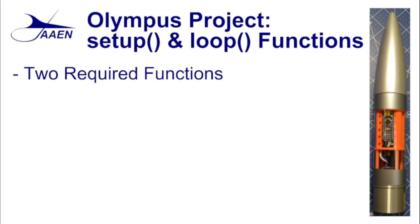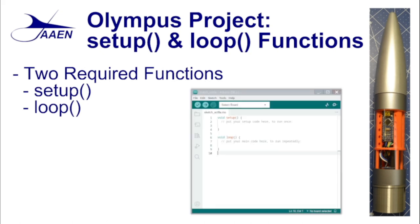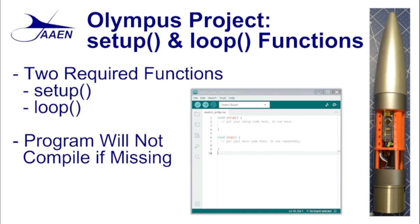With any project that you're using the Arduino for, you're going to find that there are two required functions that you need to have. The first is the setup function and the second one is the loop function. If you click on new in the Arduino IDE and get the new sketch, you'll see that those are the only two functions that are there — void setup and void loop. Without those two functions the program simply will not compile. You must have both of those functions. This is the minimum it takes to get the code to successfully compile.